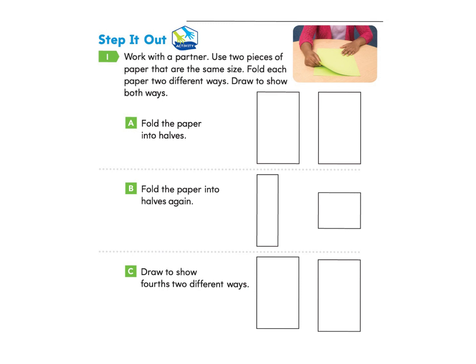Part one asks us to work with a partner. Use two pieces of paper that are the same size. Fold each paper two different ways. Draw to show both ways. If you'd like to pause and try this with paper you may do that and come back, or you can just follow along with me.